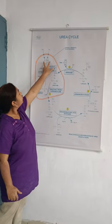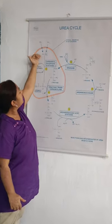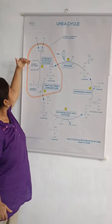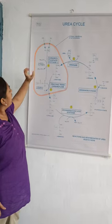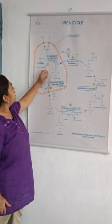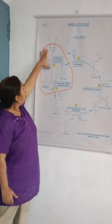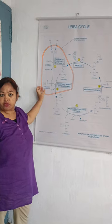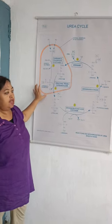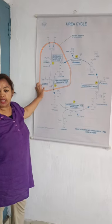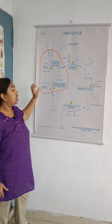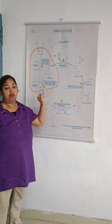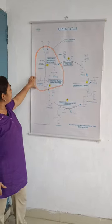In the first step, carbon dioxide and ammonium ions from the mitochondria react with glutamate and inorganic phosphate provided by ATP. All of these combine to form carbamoyl phosphate, which is the main precursor in this cycle. This is a very important step because without carbamoyl phosphate there will be no formation of urea.